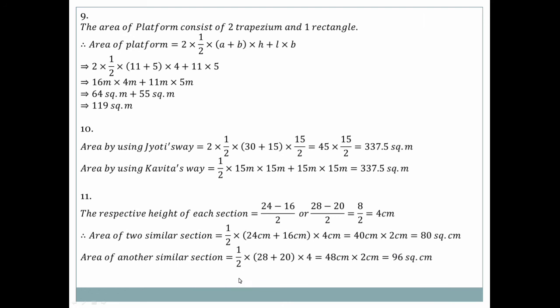Question number 11: half × (28 + 20) × 4, giving a section of 48 × 2 = 96 square centimeters. This concludes exercise 11.2.